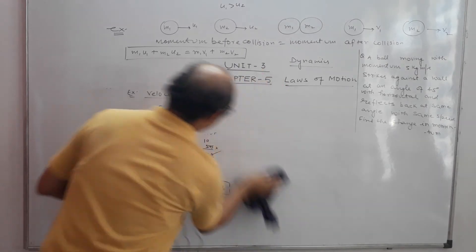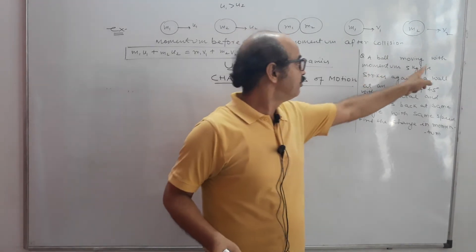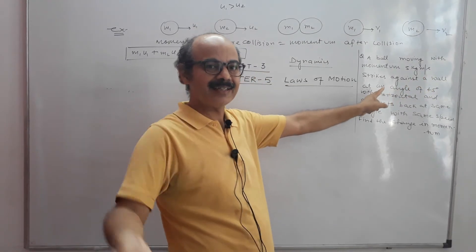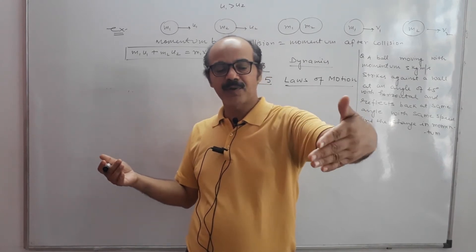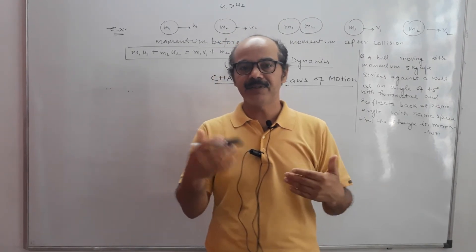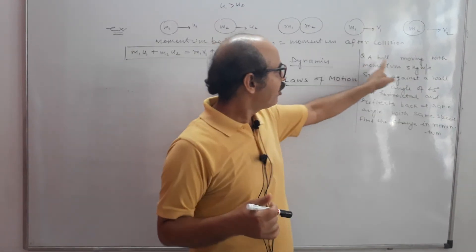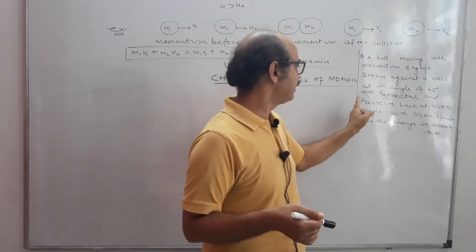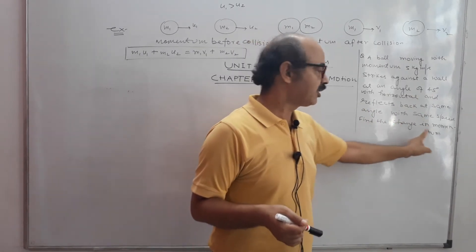Please read this question. A ball is moving with momentum 5 kg·m/s — this is a very common problem and it will also revise your vectors. A ball moving with momentum 5 kg·m/s strikes against a wall at an angle of 45 degrees with the horizontal and reflects back at the same angle with the same speed. Find the change in momentum.